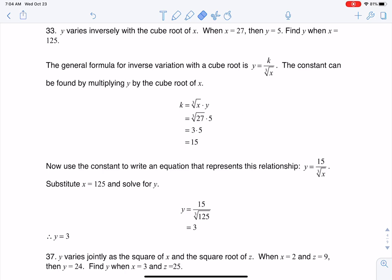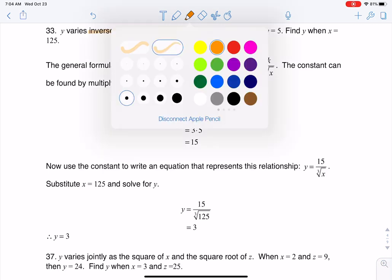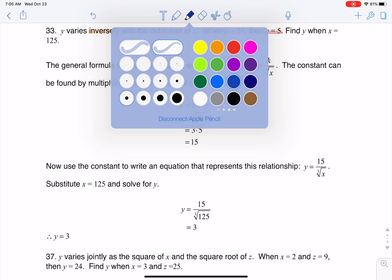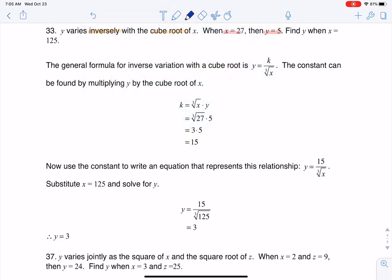Hey, Math 31. I had a question coming out of section 5.8, number 33. Some of the important words as we read through this is it says y varies inversely with the cube root of x. And then if we take a look at our complete ordered pair, we know when x is 27, y is 5. And then the last piece of information they ask us to figure out is find y when x is 125.